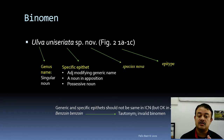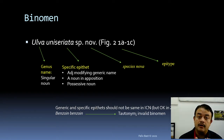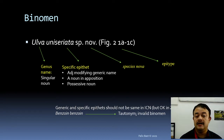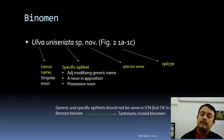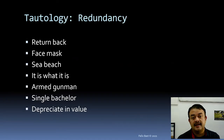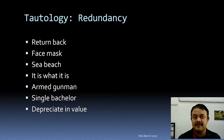Sp. nov. means 'species nova.' After the species name in parentheses, you put the figure which is your epitype. Generic and specific epithets should NOT be the same in ICN botanical nomenclature — for example, Ulva ulva is not allowed. But in zoological nomenclature, Rattus rattus is okay, or Benzoin benzoin. In botany this constitutes a tautonym — a redundant binomen, which is invalid. Tautology: for example, 'return back,' 'face mask,' 'sea beach' — all are tautonyms in everyday language.